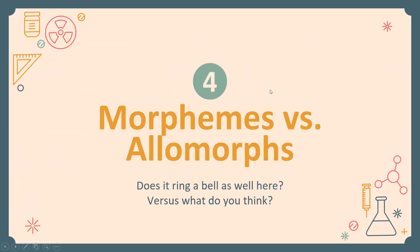Next time we will go into morphemes and allomorphs, which are very important — they are the core of morphology. The morpheme is similar to the phoneme, and the allomorph is similar to the allophone. These two branches — morphology and phonology — are interrelated, and we will see how in the next lecture. Thank you all for attending today, and have a good evening.